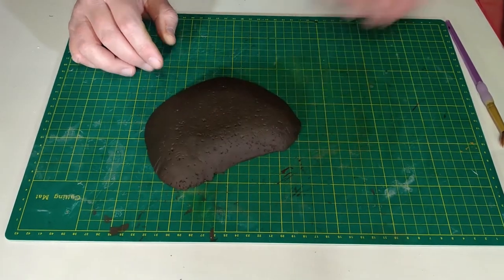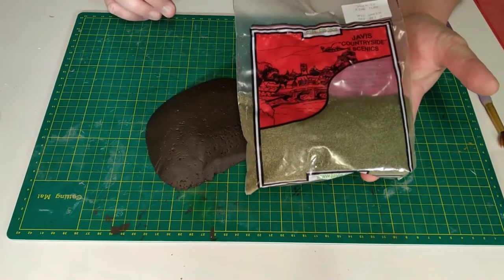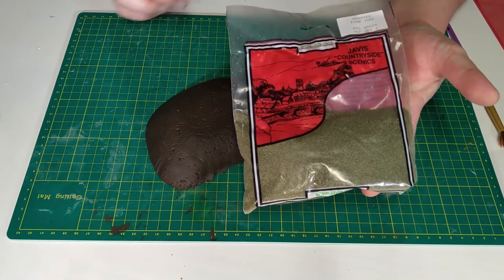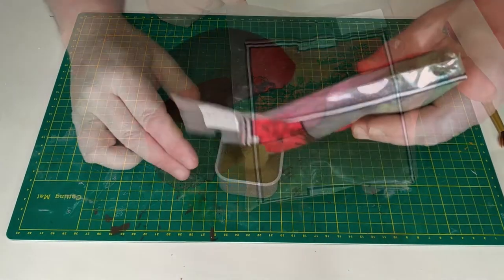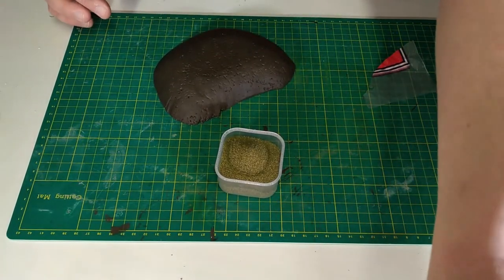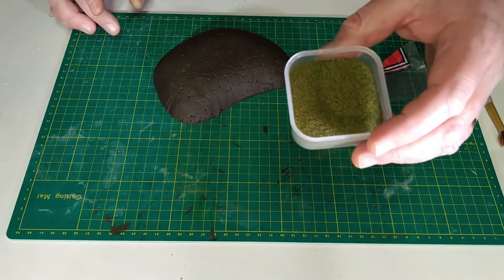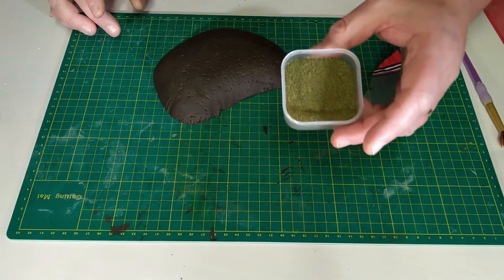Now that the paint on the brown hill is dry, we're ready to add the flock. I'm going to use some Javis flock. It's the mid green color from their premier turf range. As I find it awkward to work with the bag, I'm going to decant a portion of the flock into a plastic container for ease of use. Now that it's out of the bag, you can get a better look at the texture and color.